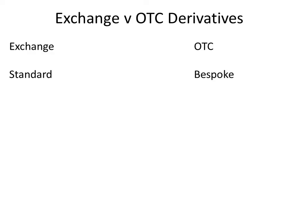Whereas with exchange-based derivatives, the exchange dictates what the delivery month is, for example, as well as quality and quantity.